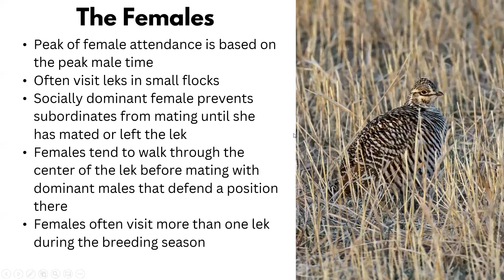Females are not flashy — they don't need to be. The peak of female attendance matches the peak male display time. Females visit in small flocks of two to four, and there's a social hierarchy — the dominant female mates or leaves first, then subordinate females choose from what remains. Females tend to walk through the center of the lek before mating. They may visit more than one lek if they don't see what they like, while males typically establish a territory and stay there.